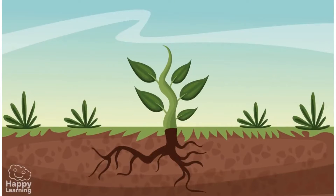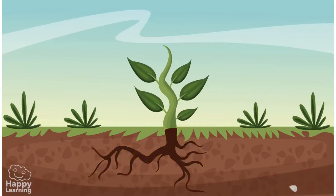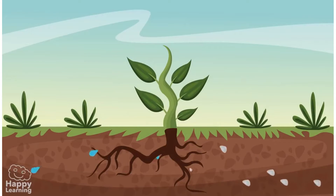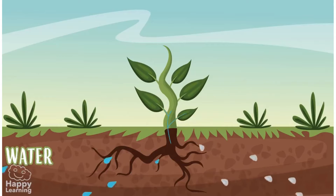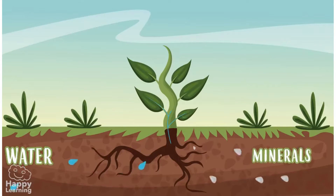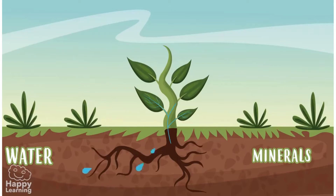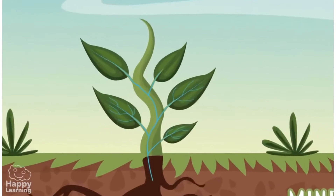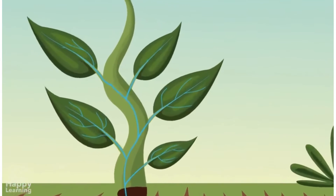Look at this plant! As you can see, its roots are anchored to the ground, and through them the plant absorbs water and minerals in the soil. Water with minerals are then transported up the stem, reaching the leaves.